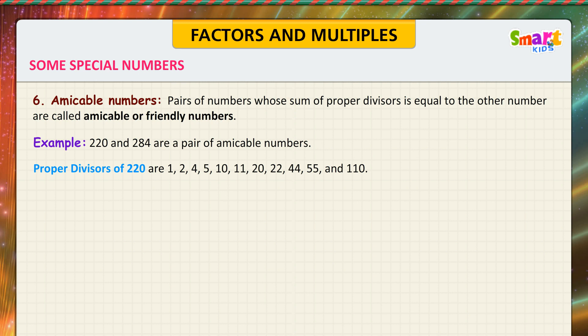Proper divisors of 220 are 1, 2, 4, 5, 10, 11, 20, 22, 44, 55, and 110. Their sum is equal to 1 plus 2 plus 4 plus 5 plus 10 plus 11 plus 20 plus 22 plus 44 plus 55 plus 110 is equal to 284.